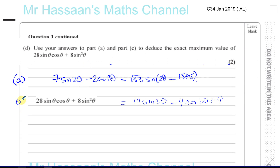We found in part A that 7 sine 2θ minus 2 cosine 2θ equals root 53 sine(2θ minus 15.95°). And we found in part C that 28 sine theta cosine theta plus 8 sine squared theta can be written as 14 sine 2θ minus 4 cosine 2θ plus 4.